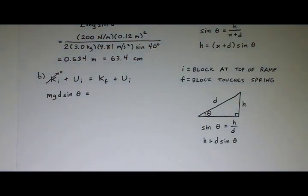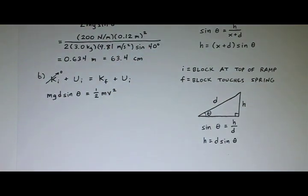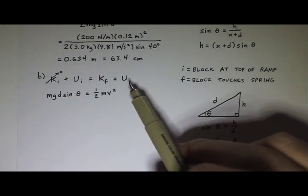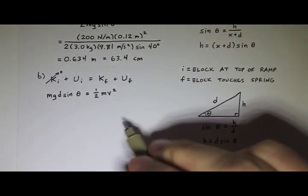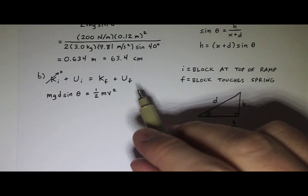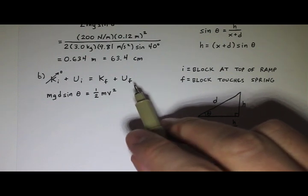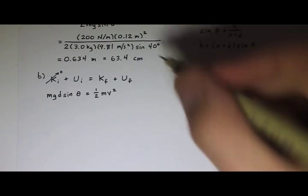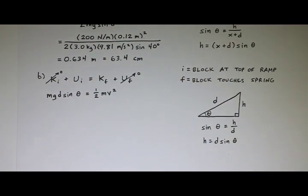And my final kinetic energy. Well, it does have a non-zero speed when it touches the spring, so I have a one-half mv squared. The spring is not compressed, so I don't have any elastic potential energy. I don't have any gravitational potential energy because I changed my zero line, so that when it touched the spring, that's where the zero was. So that goes away.